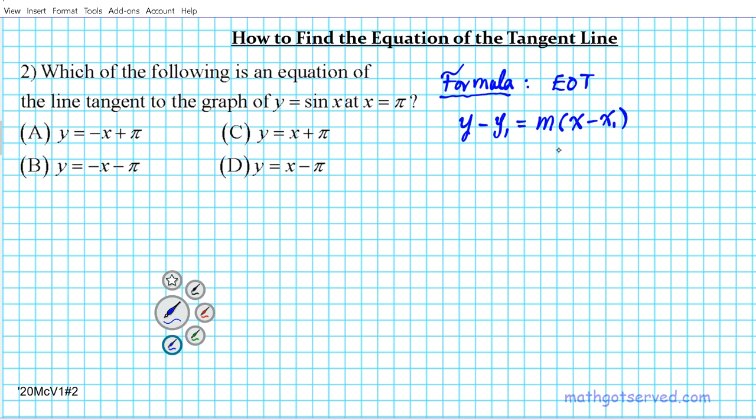Where's the calculus here? The calculus is in the M component. You have only one point, and you cannot use algebra to find the slope at a point. You need to use calculus. M is basically the derivative at X1, F prime of X1. So you have algebra with a hint of calculus. This is the equation of the tangent line formula.